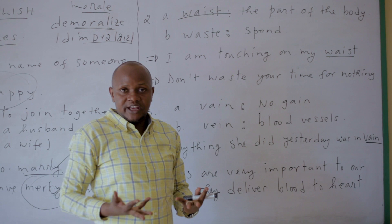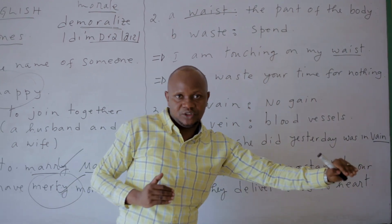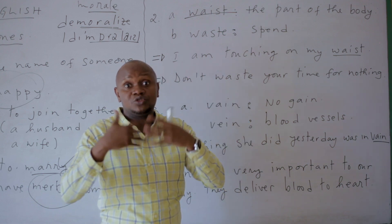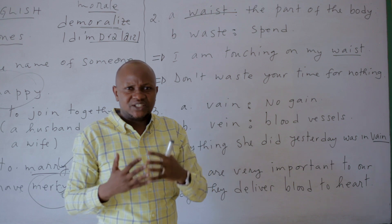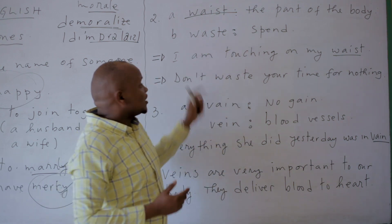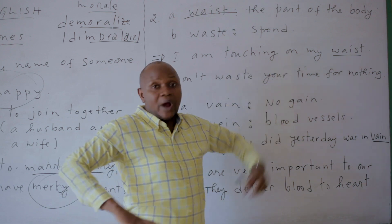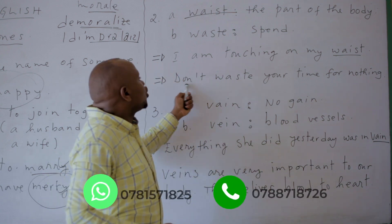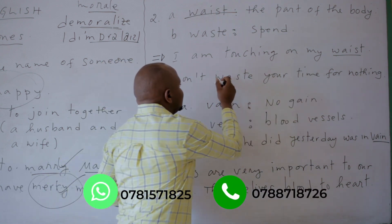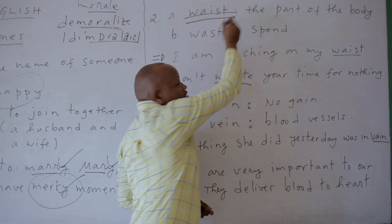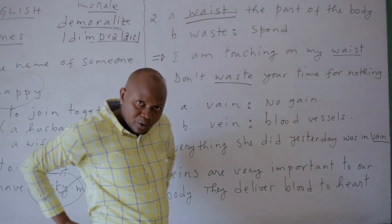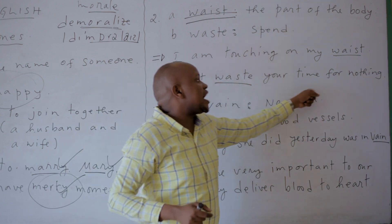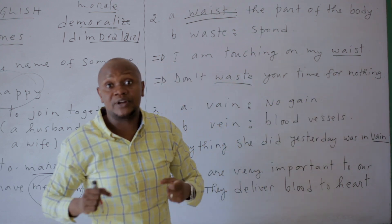But 'Waste' means to spend — sometimes used negatively, meaning to spend something uselessly. For example: I wasted my time for nothing yesterday. That is 'to waste.' So: I am touching on my waist — and don't waste your time for nothing. This 'waist' is the part of the body, and this 'waste' means to spend or use up.